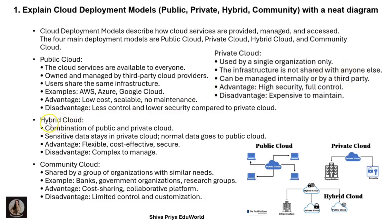The third type is hybrid cloud — a combination of public and private cloud. Sensitive data stays in the private cloud; if the data is normal, it goes to the public cloud. The advantage is that it is very flexible, cost-effective, and secure because we have private cloud as well. The disadvantage is that it is complex to manage — deciding which data to store in which cloud.